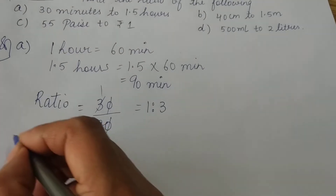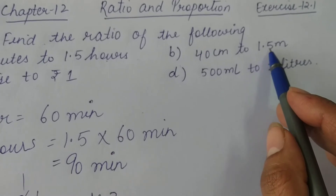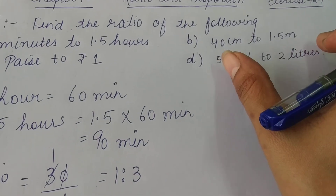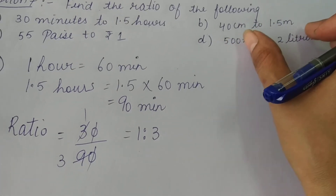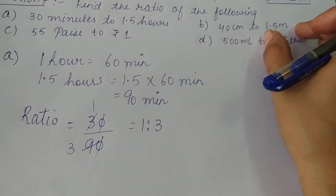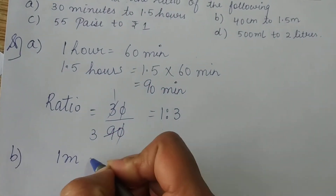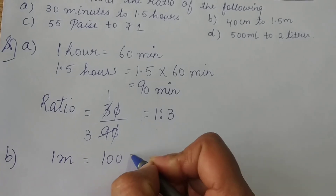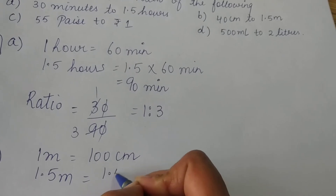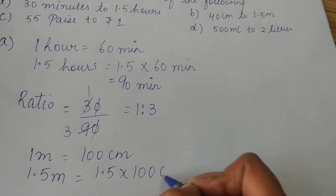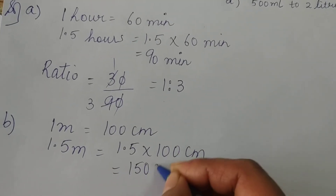Let's start Part B. Part B is 40 centimeters to 1.5 meters. Here also the units are different, so first we will convert into the same units. I am converting 1.5 meters into centimeters. Since 1 meter is equal to 100 centimeters, 1.5 meters will be 1.5 multiplied by 100 centimeters.